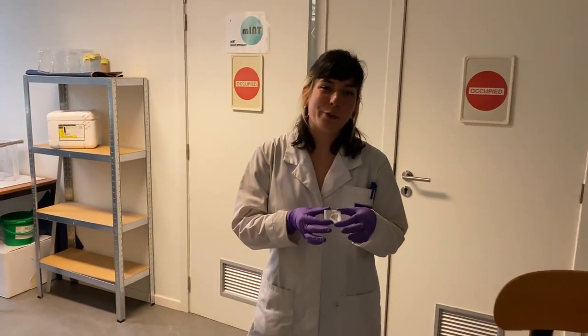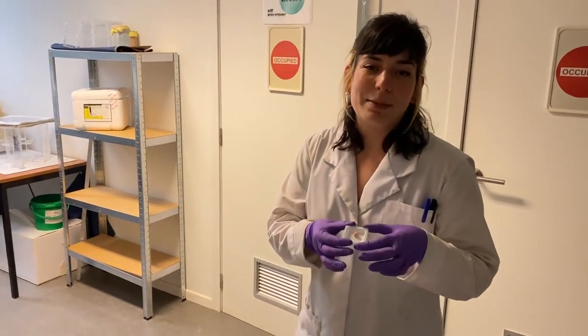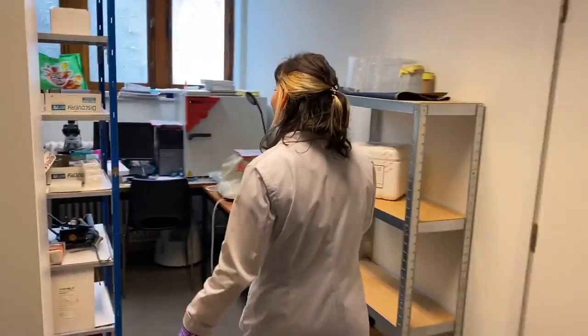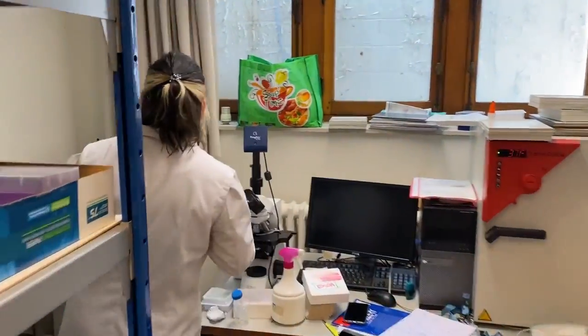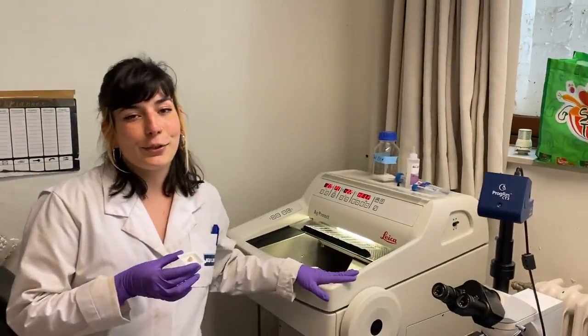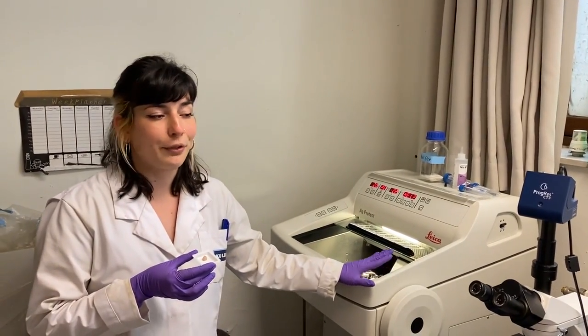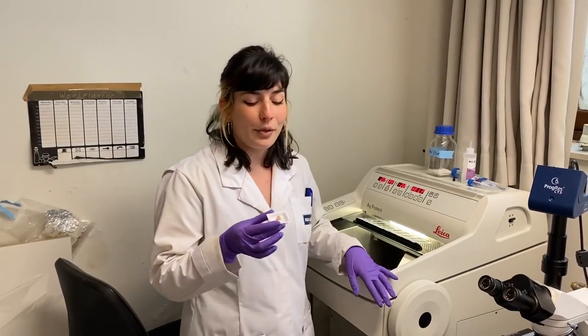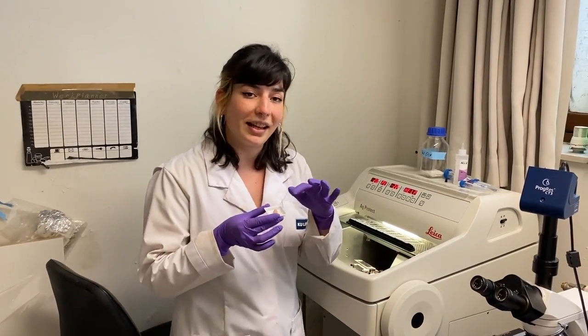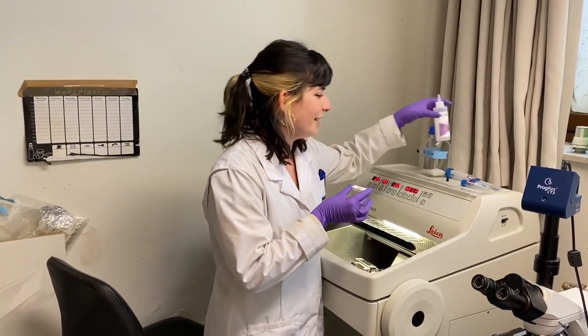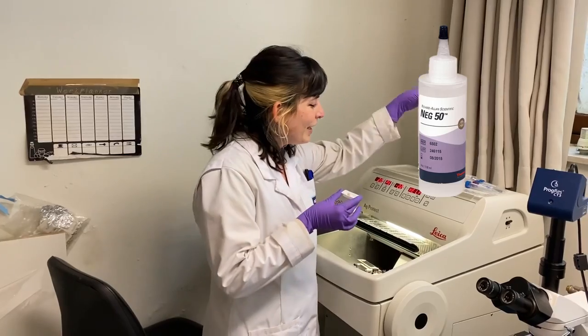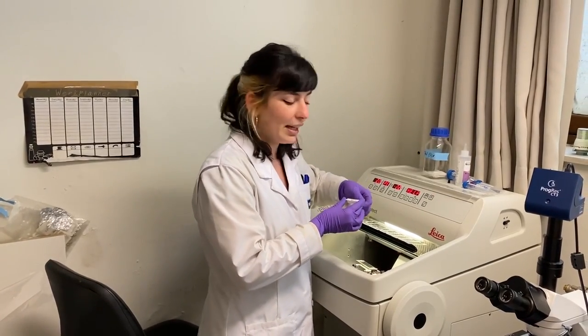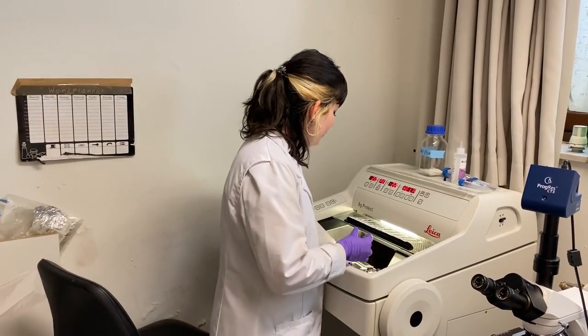So once our brains are frozen, we can take them to the cryostat, which is this device that is used to section brain tissue so we can perform immunochemical analysis later. What we first need to do is embed our brains into tissue tags and put them inside of the cryostat and wait until the glue freezes.